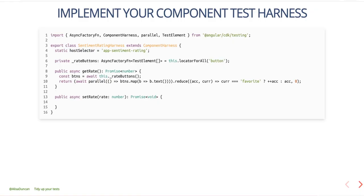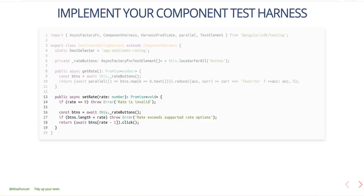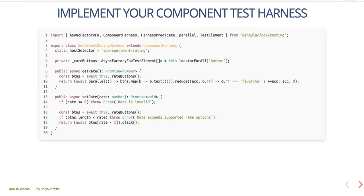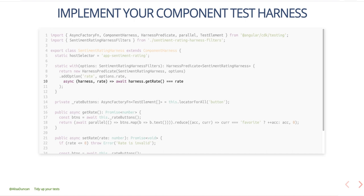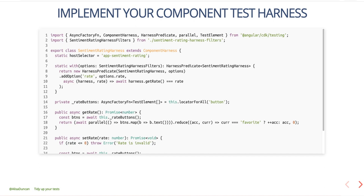Next, to set the rate, we first want to do some error handling because that's prudent. Then we get the rate buttons and click on the button that matches the requested rate. So with that, we have a component test harness, but we still want to add the filtering. To do that, import the interface we wrote, then create a static with() method that returns a HarnessPredicate. We create a new HarnessPredicate with the option rate which we want to be able to search on and implement the predicate — we're just making sure that the requested rate matches the rate of this component. And with that, the component test harness is complete.